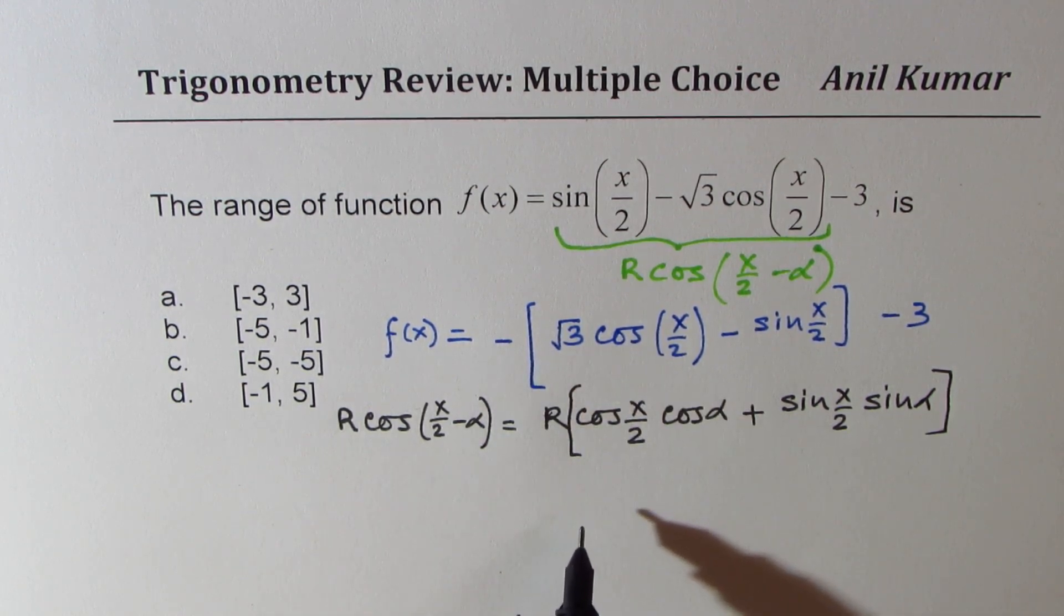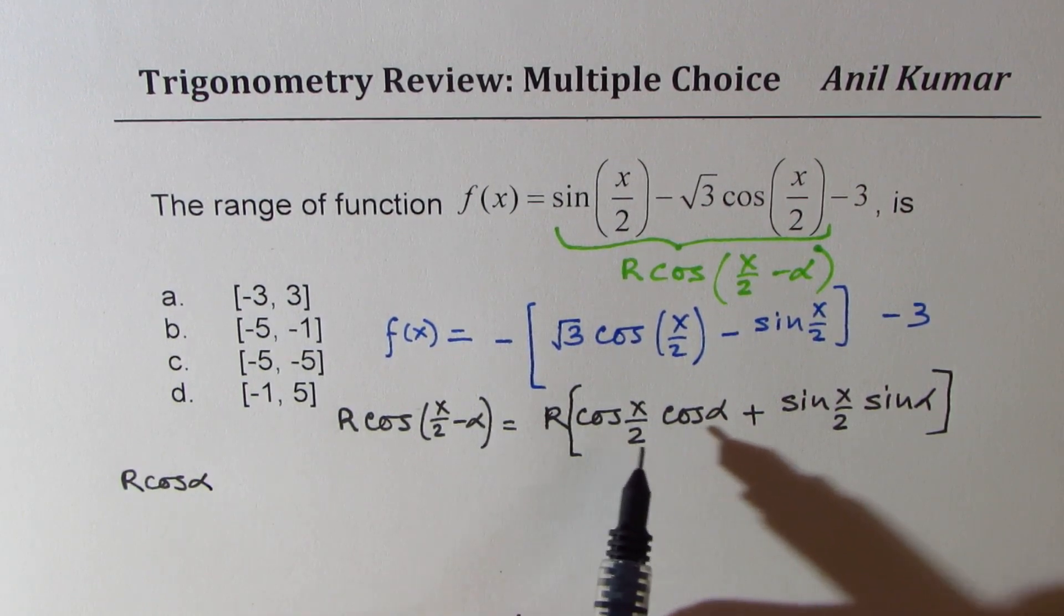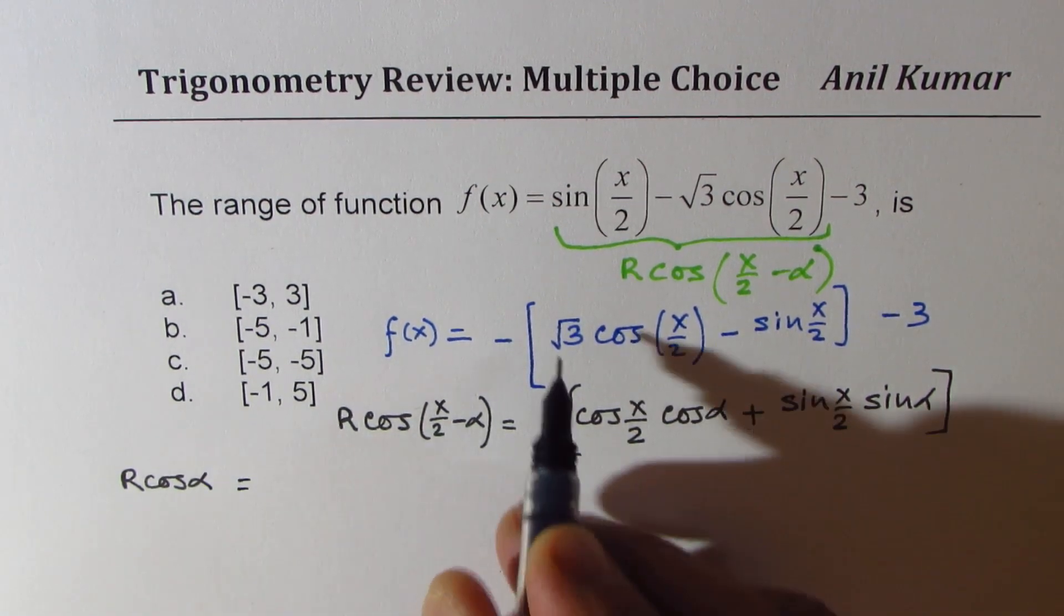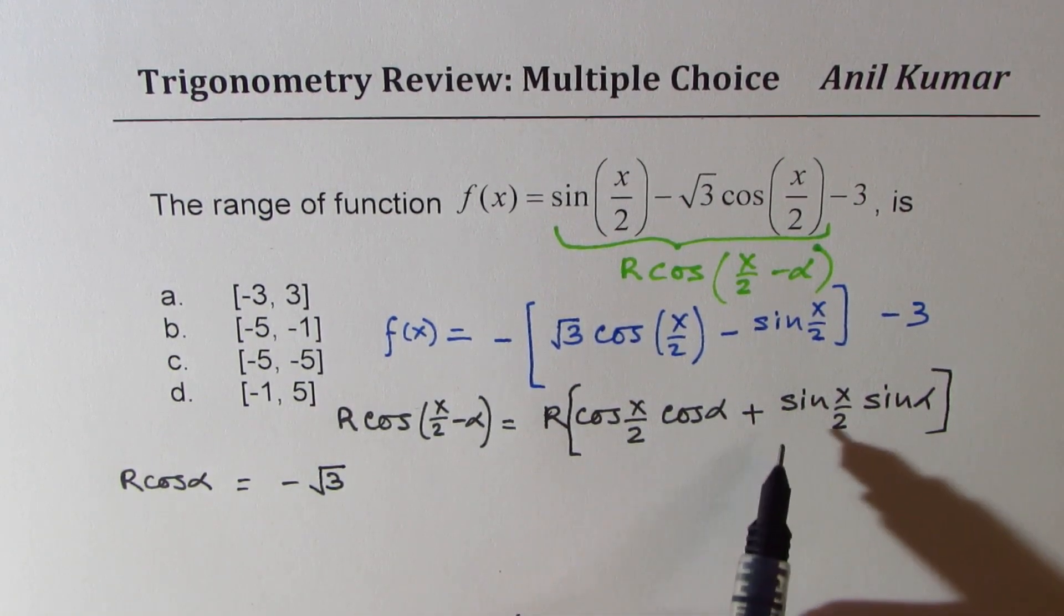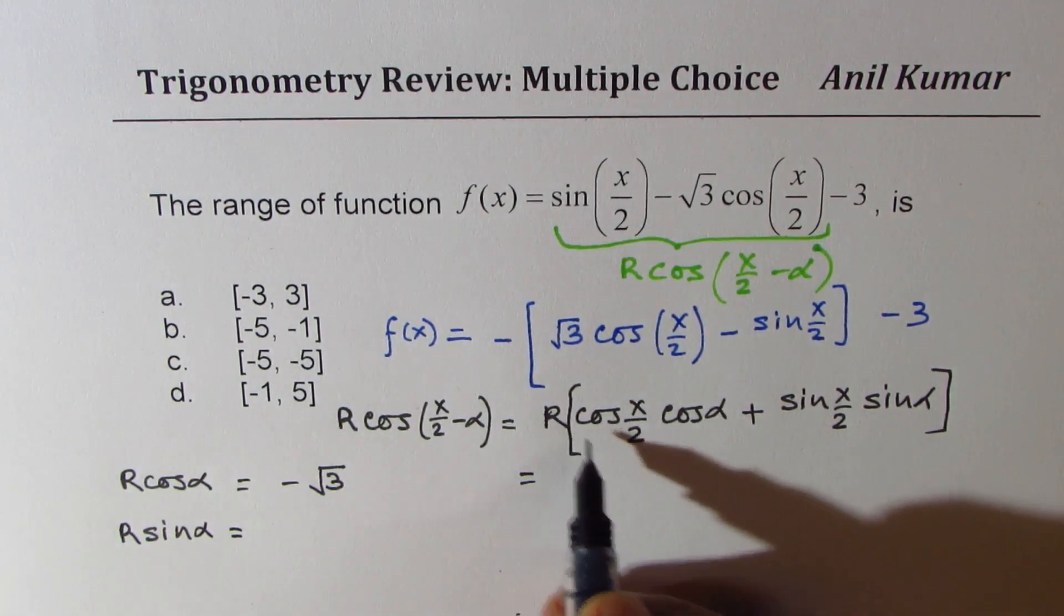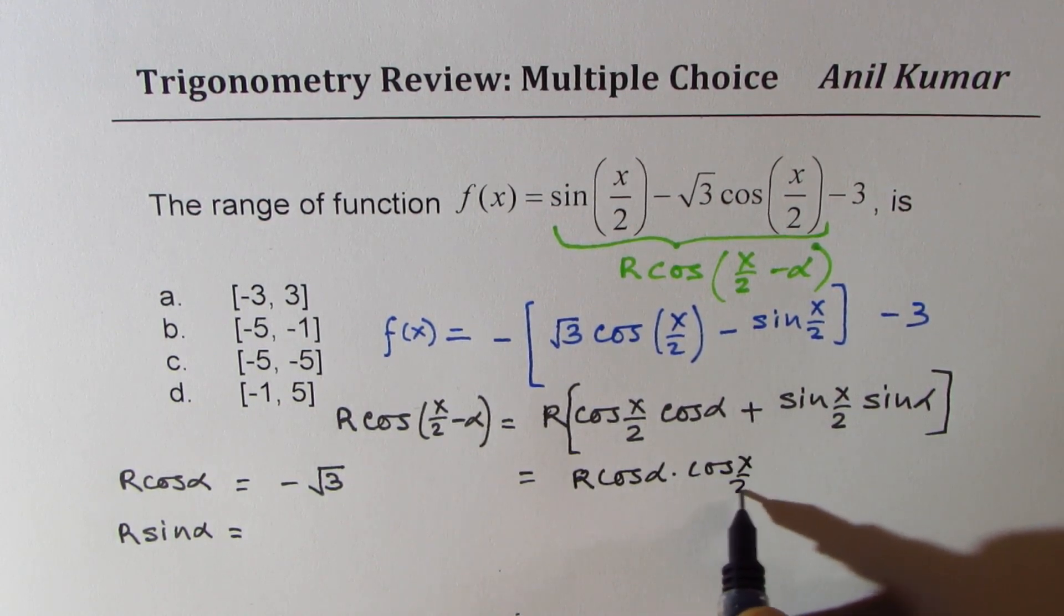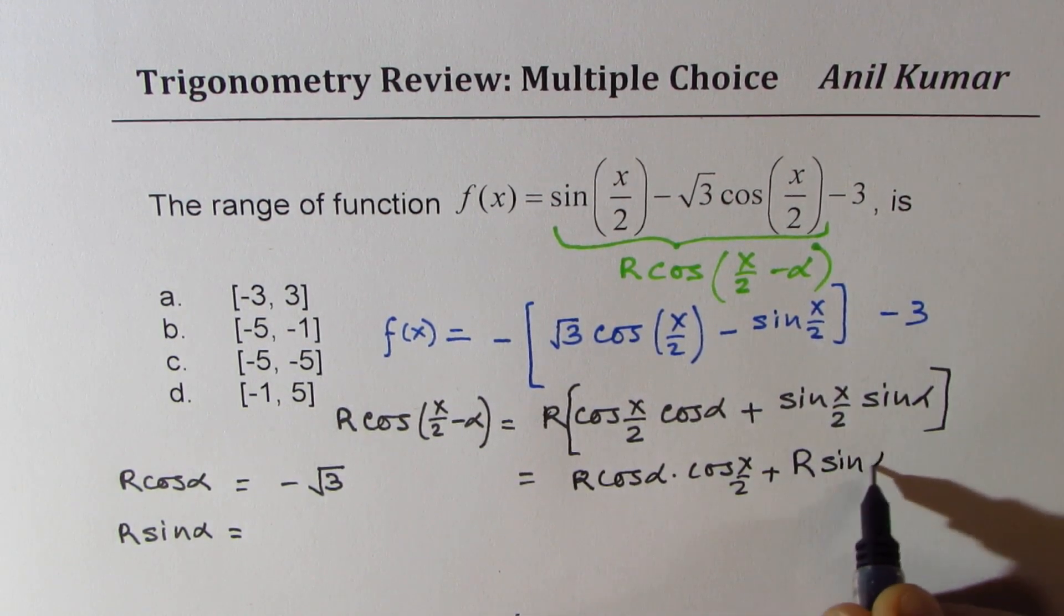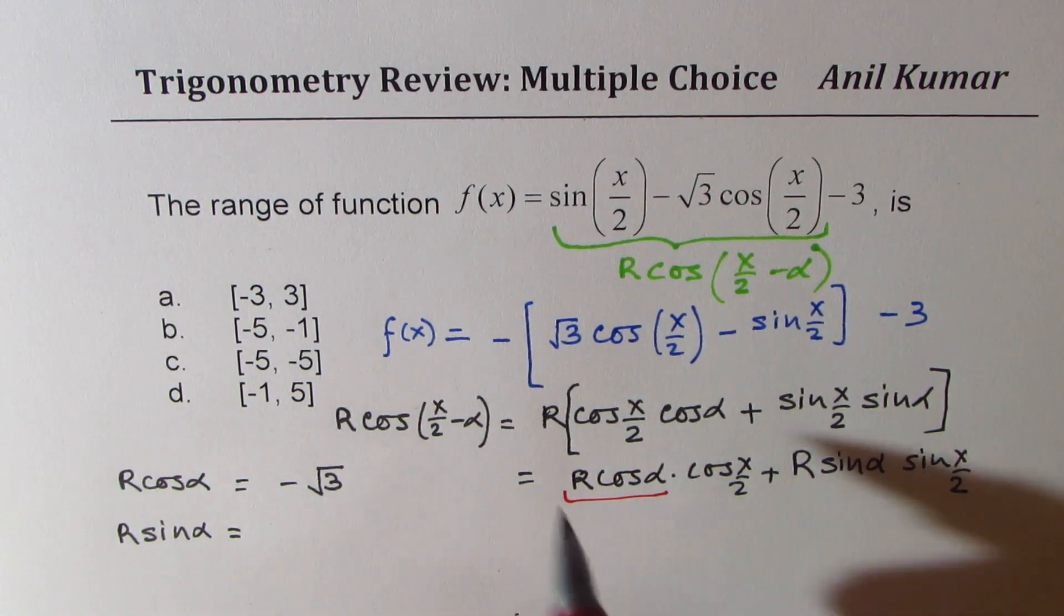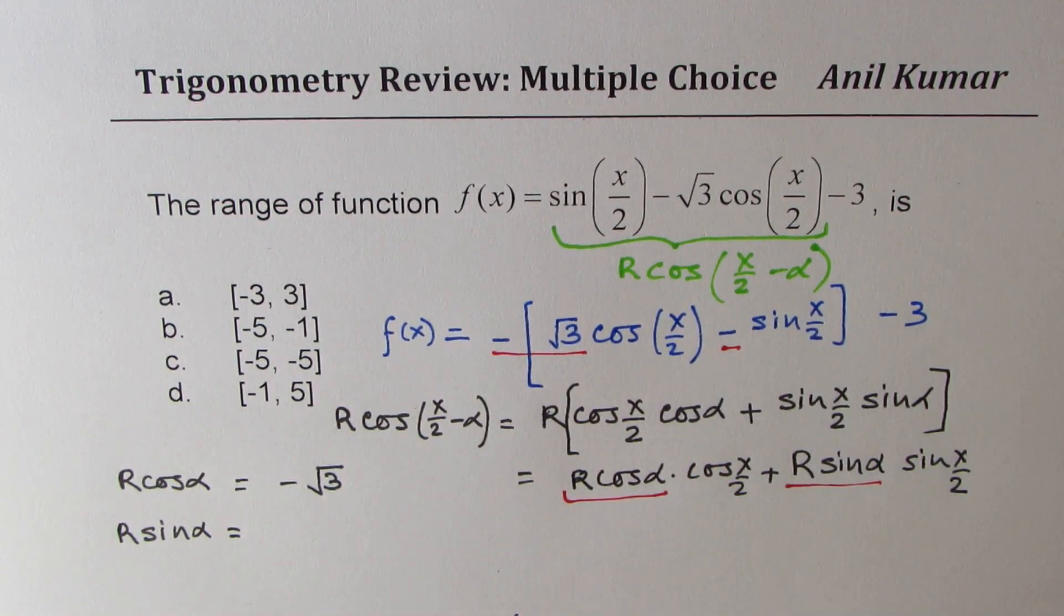If you compare these two equations, you can see that R cos alpha will be equal to minus square root 3, and R sine alpha equals negative 1, or we can write R sine alpha as positive 1. So R cos alpha is negative square root 3 and R sine alpha is positive 1.